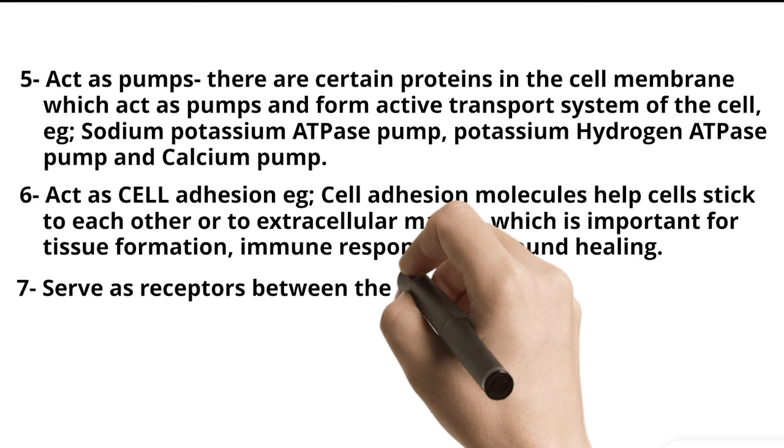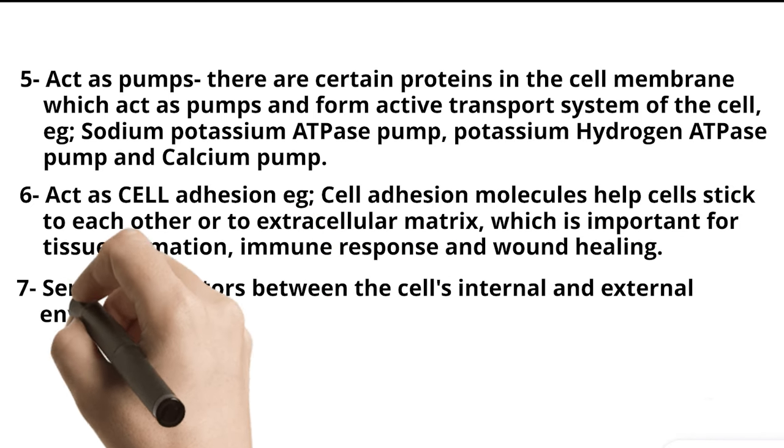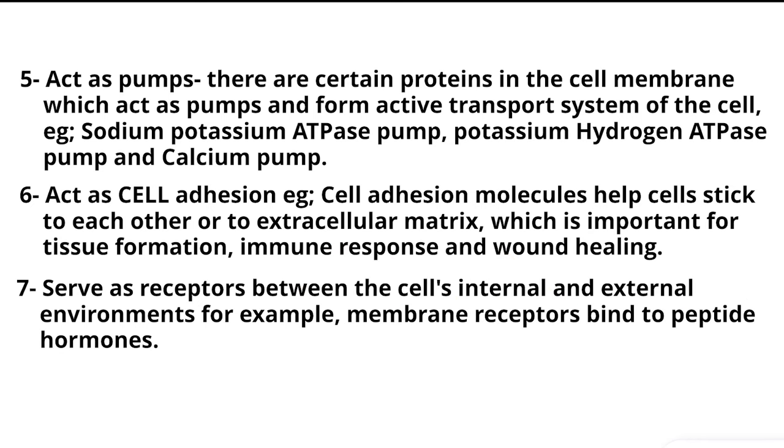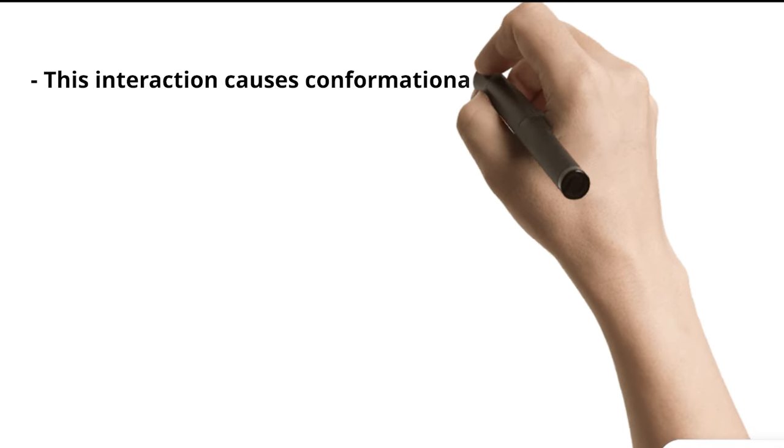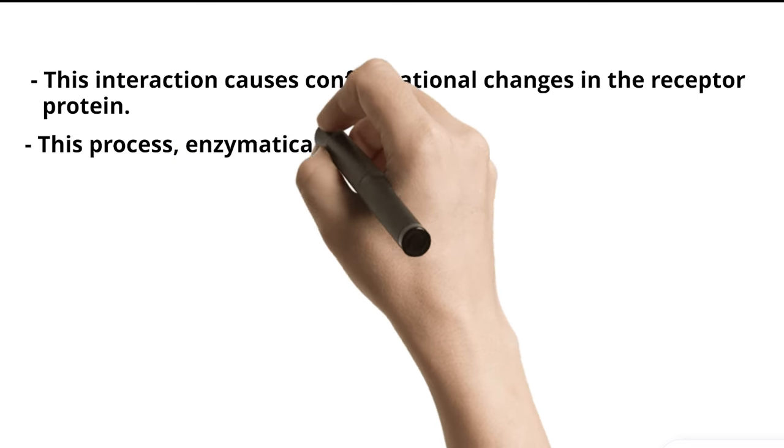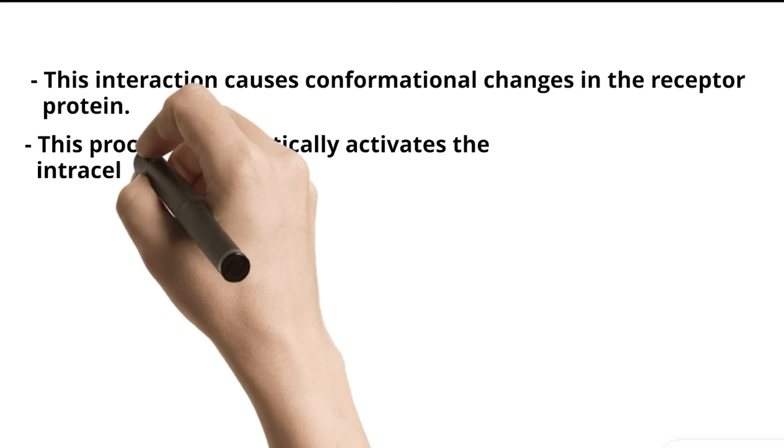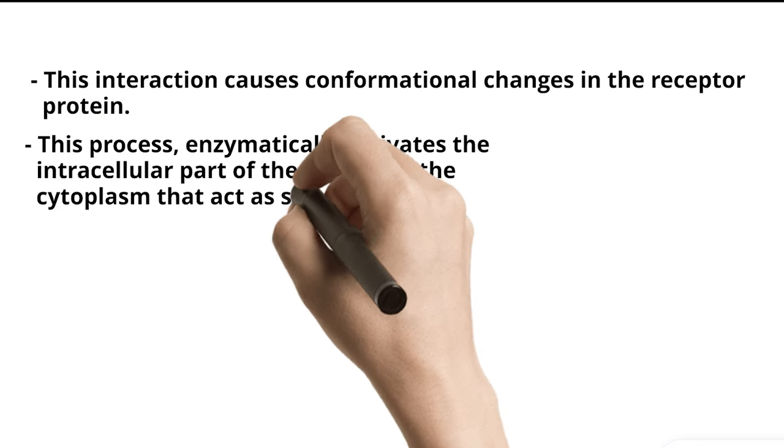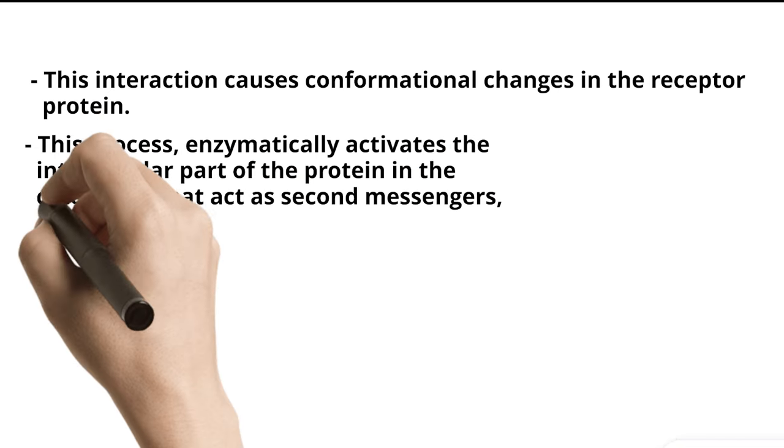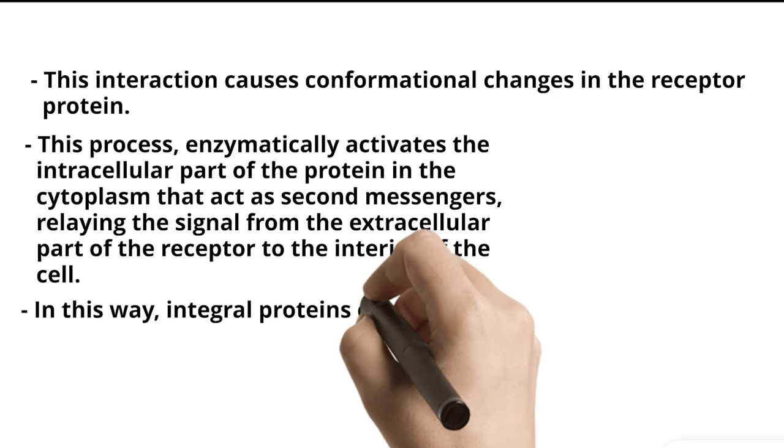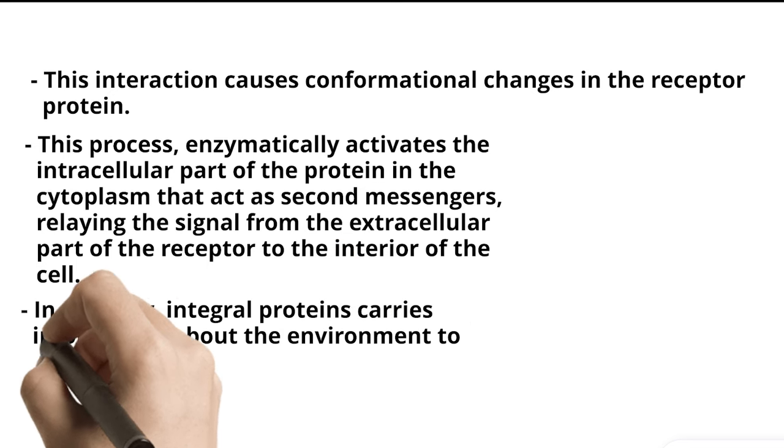7. Serve as receptors between the cell's internal and external environments. For example, membrane receptors bind to peptide hormones. This interaction causes conformational changes in the receptor protein. This process enzymatically activates the intracellular part of the protein in the cytoplasm that act as second messengers, relaying the signal from the extracellular part of the receptor to the interior of the cell. In this way, integral proteins carry information about the environment to the cell interior.